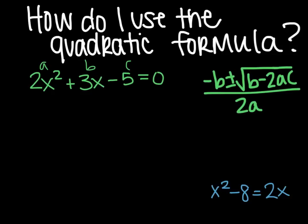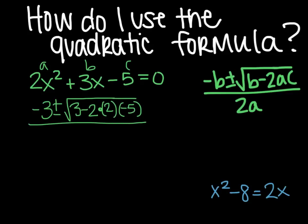So opposite of b would be negative 3 plus or minus the square root of b, so 3, minus 2 times a, which is 2, times c, which is negative 5, all divided by 2 times a, which is 2. And then you just work your way through this following order of operations and simplifying it.